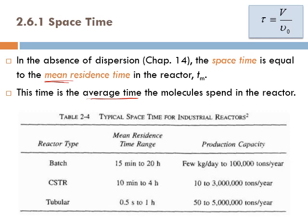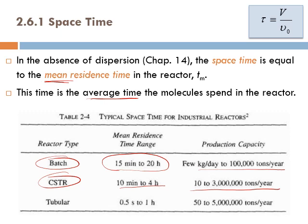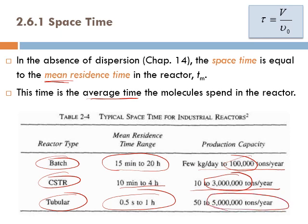Typical space times for industrial reactors: for a batch reactor, the mean residence time is between 15 minutes and 20 hours. In a CSTR, it's smaller — from 10 minutes to 4 hours — allowing processing of up to 3 million tons per year. In a tubular reactor, the residence time is much shorter, ranging from 0.5 seconds to 1 hour, allowing processing of up to 5 million tons per year.